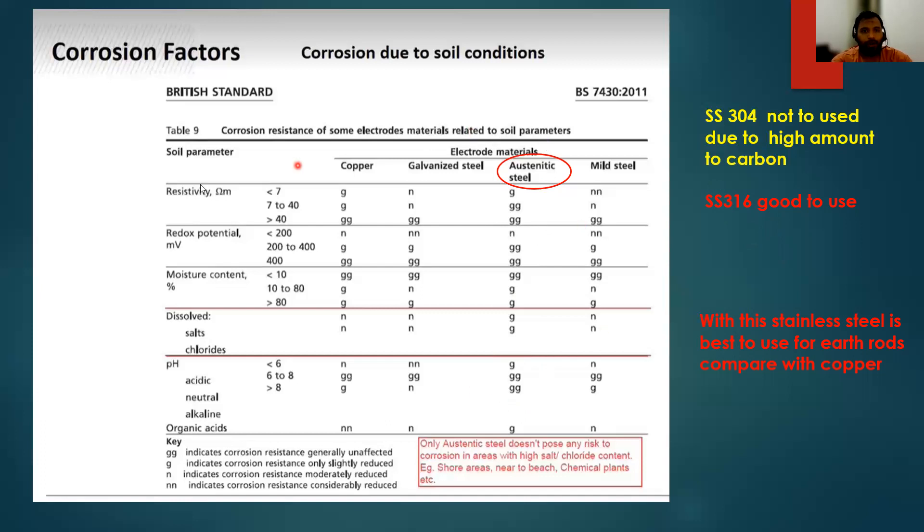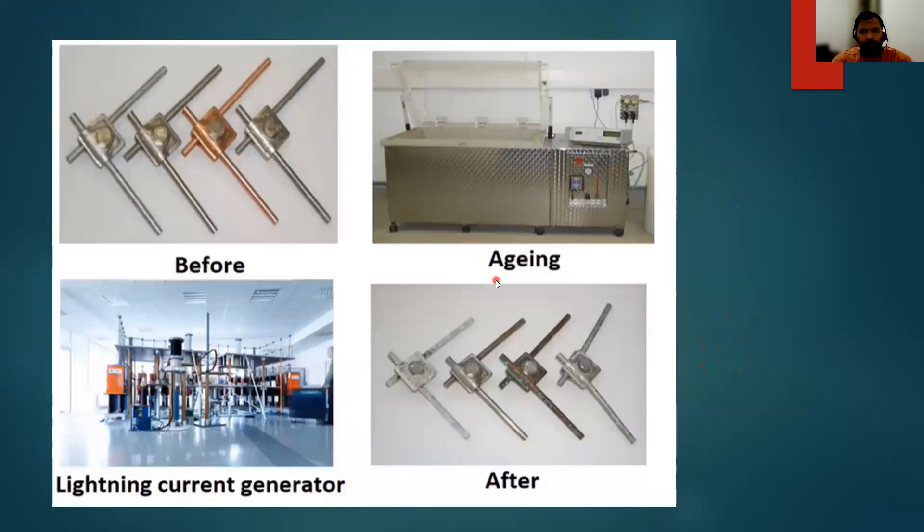Comparing all these parameters, if you are comparing copper and galvanized steel, austenitic steel, mild steel, the best material is austenitic steel rods. Those materials are very good for earth electrodes. I am showing you test parameters, what will happen when an aging test is done as well as lightning current generator. Aging test done before - these are the aluminum and stainless steel and copper and galvanized steel.